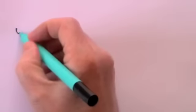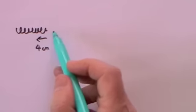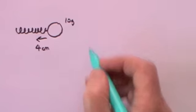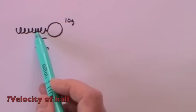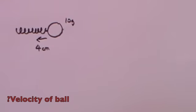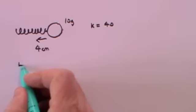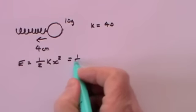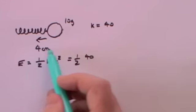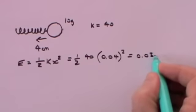Question 5. We have a spring which we are going to compress by 4 centimetres, then let go so it hits a ball. The ball has a mass of 10 grams. The spring constant is 40 newtons per metre. The energy in the spring equals a half k x squared: a half times 40 times 0.04 squared, which comes to 0.032 joules.